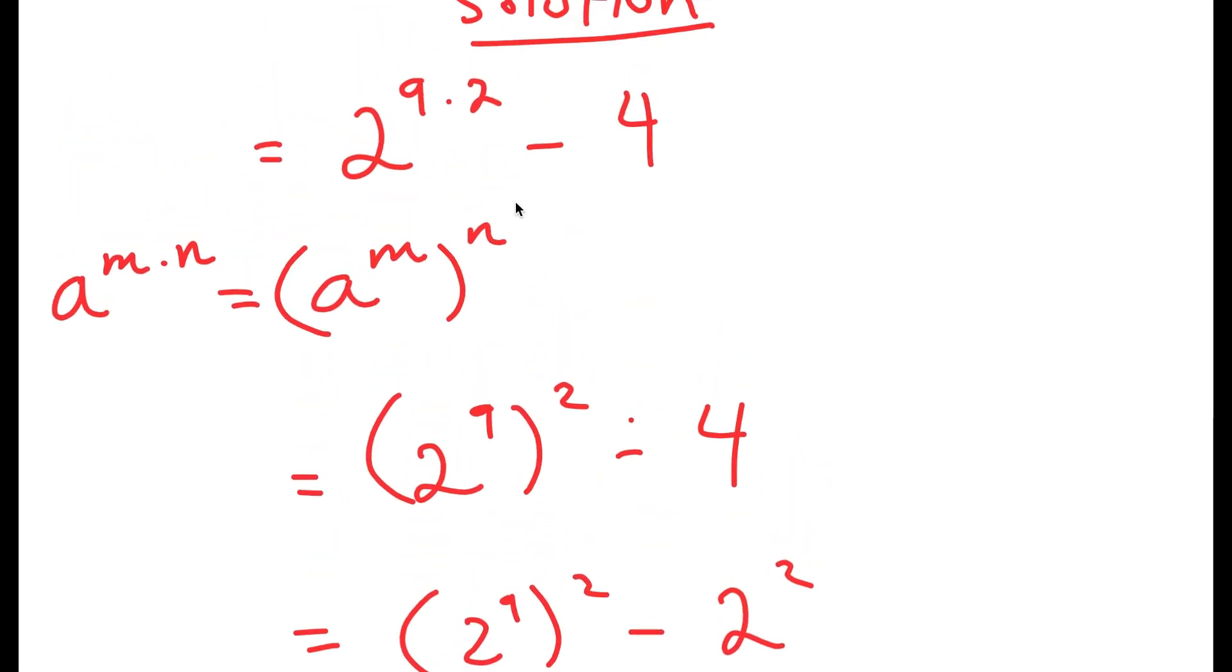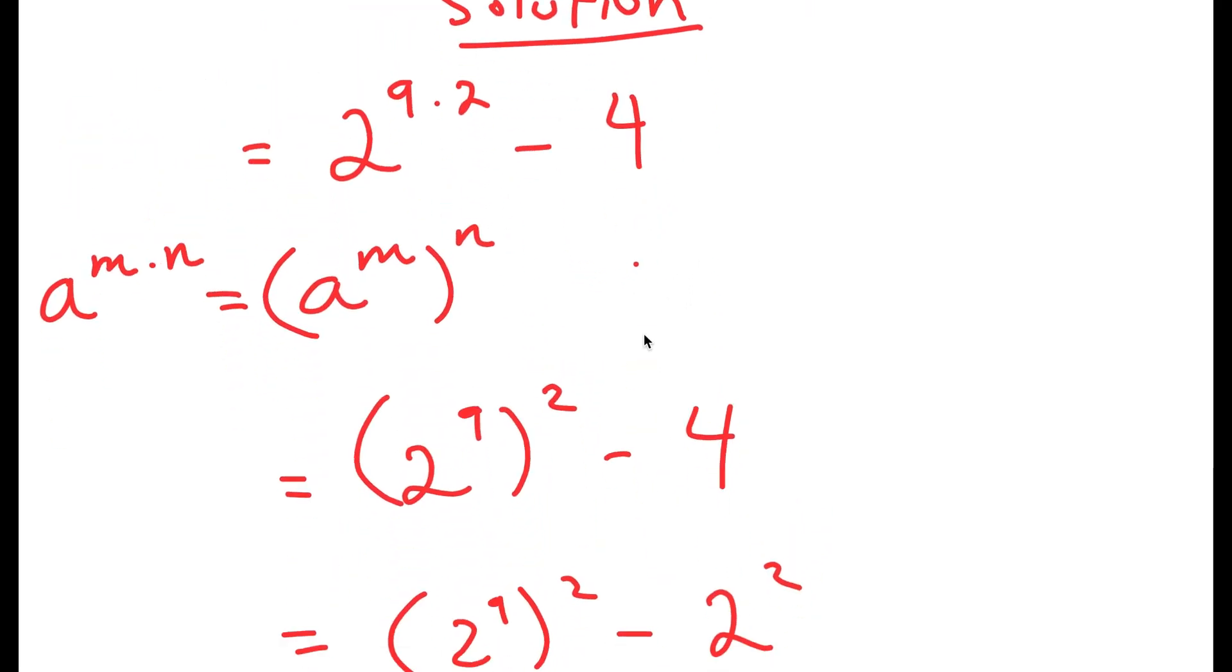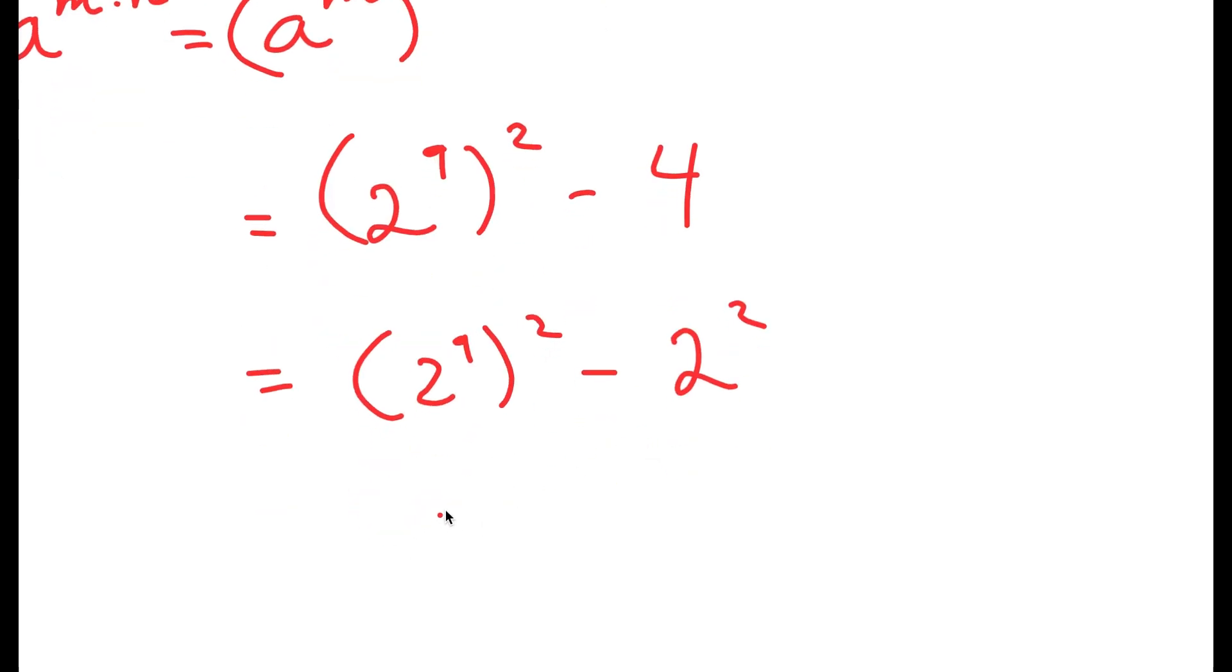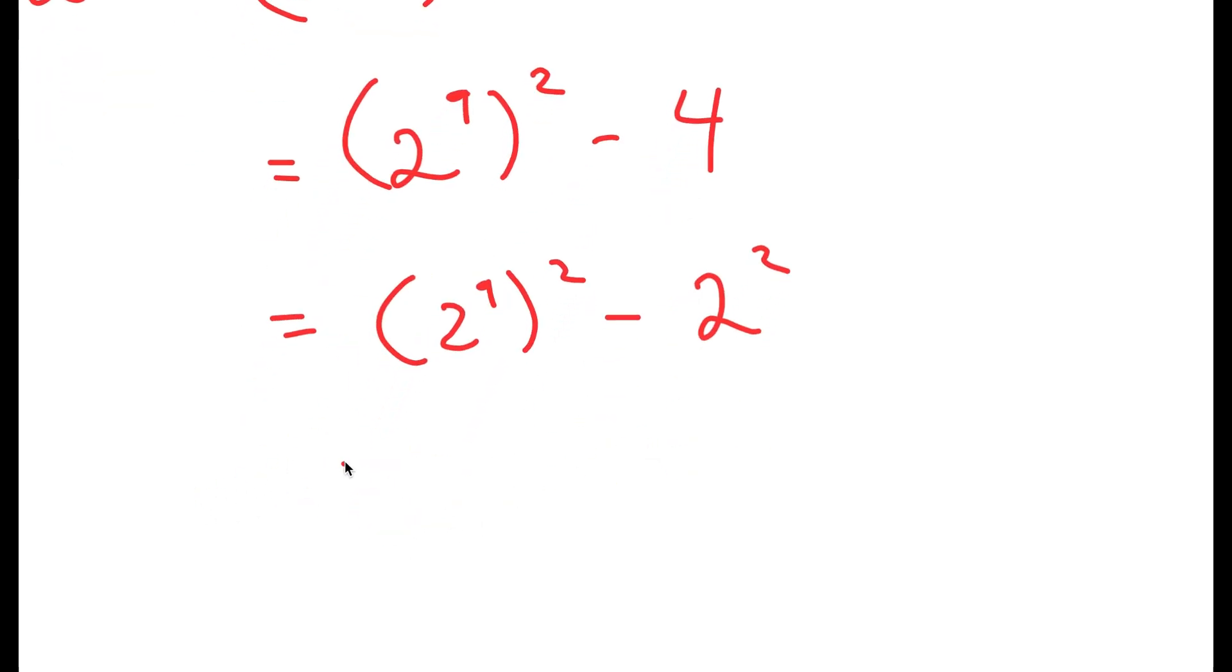Now, the reason I did this and rewrote 2 to the power of 18 minus 4 as 2 to the power of 9 to the power of 2 minus 2 squared is because now I can use an algebraic property that states that if I have something in the form a squared minus b squared, this is equal to a plus b times a minus b.